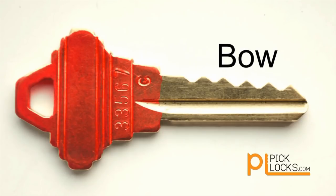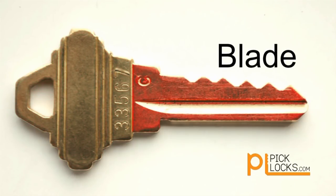The bow of the key is that part of the key held by the fingers when opening a lock. The blade is that part of the key which enters the lock.